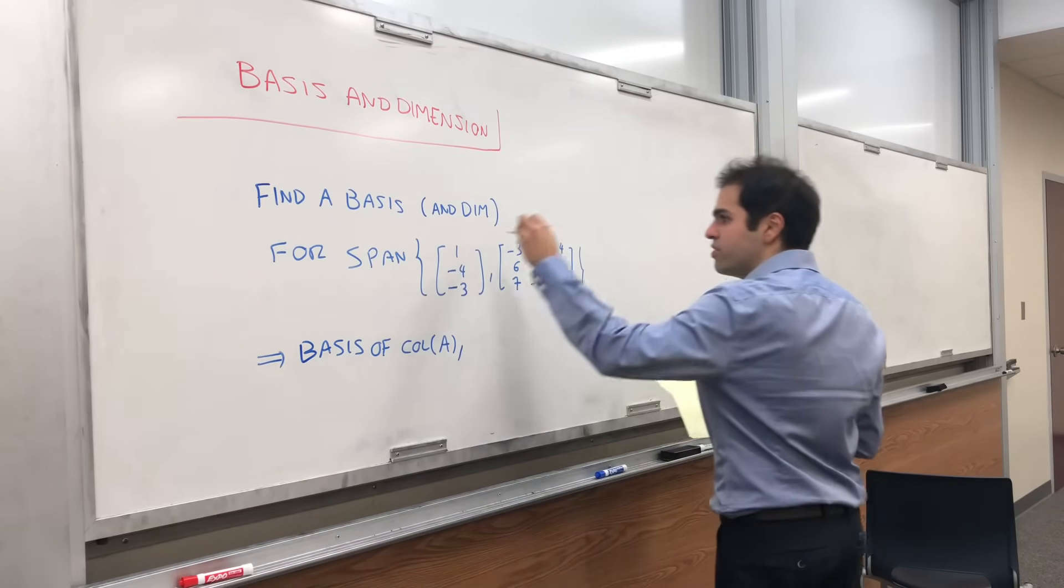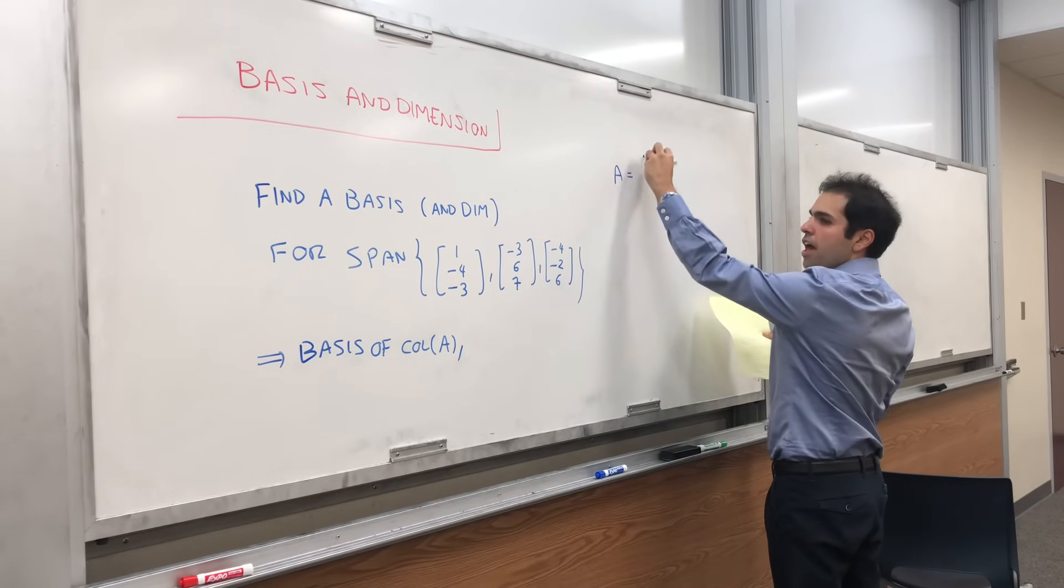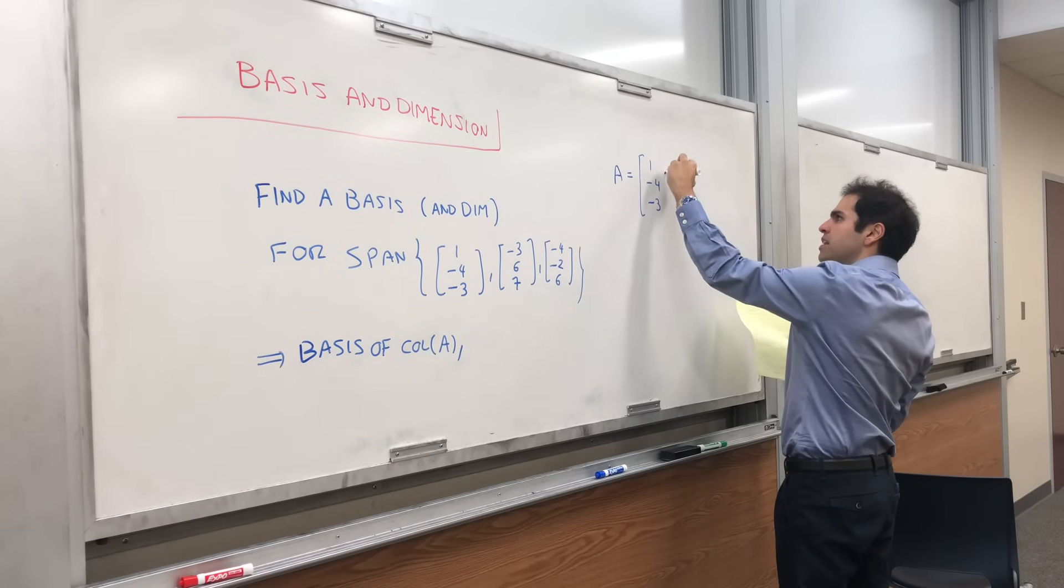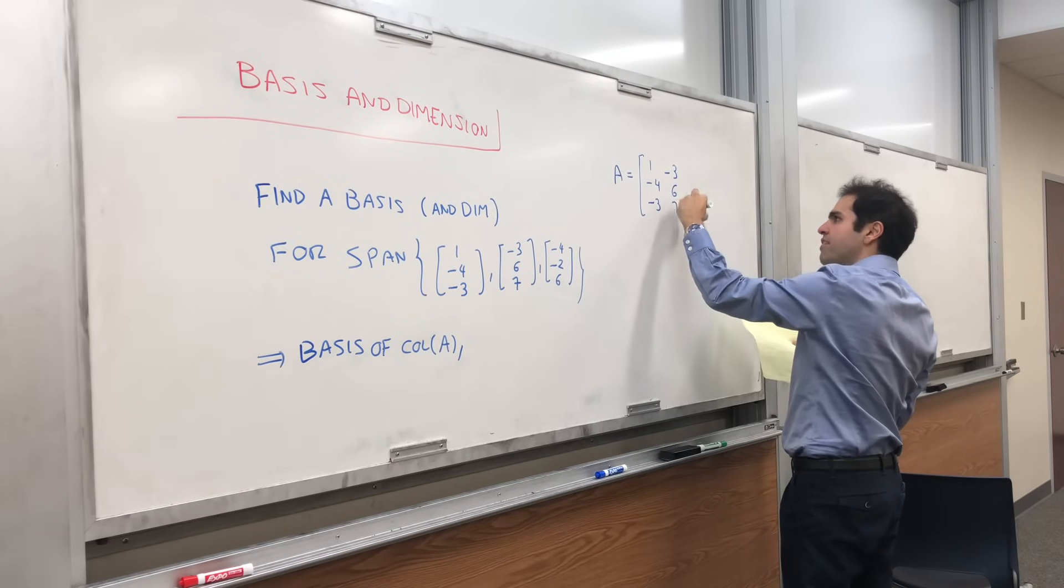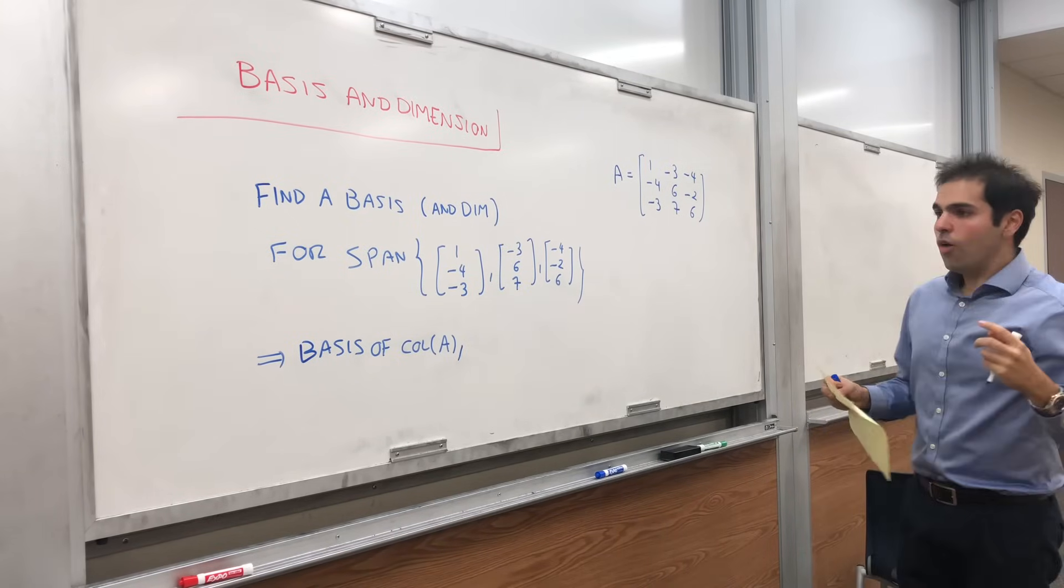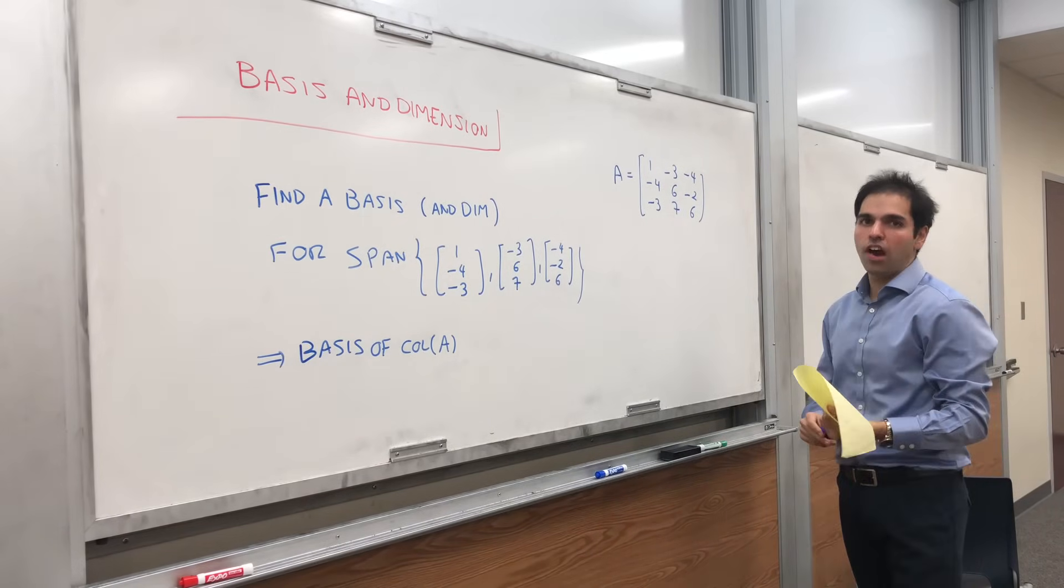Where A is just the matrix where you put everything together. A is [1, -4, -3], [-3, 6, 7], and [-4, -2, 6]. Why is that? That's precisely by definition of the column space.